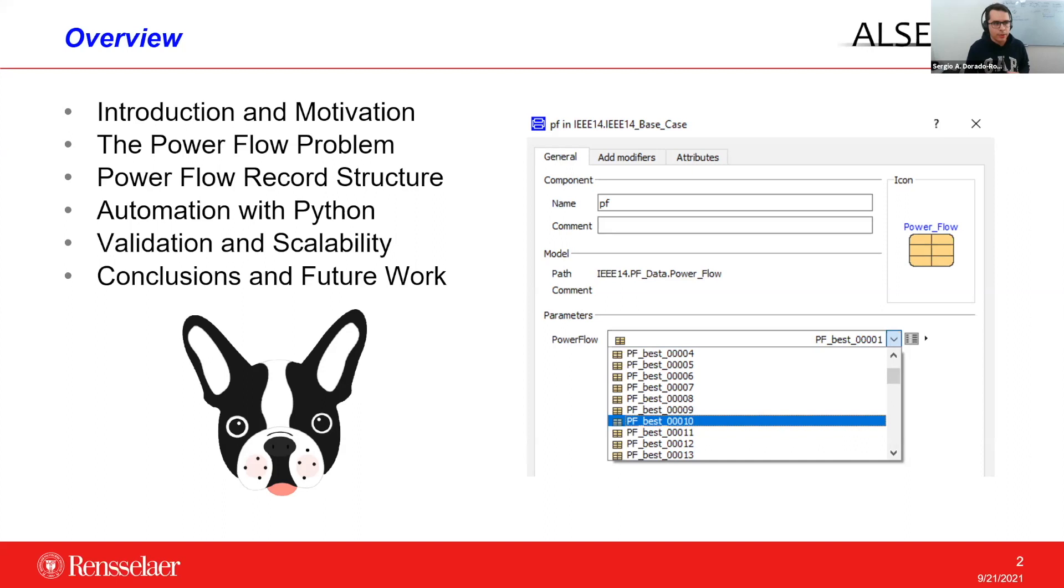First of all, I would like to briefly describe an introduction and motivation of why this work is relevant in the context of phasor time domain simulation. Then I will briefly describe what the problem that we are trying to solve is and how did we solve it. Basically, the data structure that we employ to handle power flow variables with records. Then we will see how this whole process was automated with Python, and we will see how this was validated and escalated for large power system models. Finally, I'll conclude this presentation with stating some conclusions and some directions of future work.